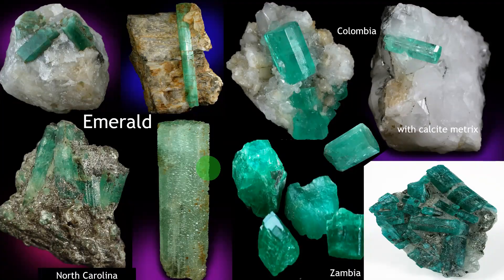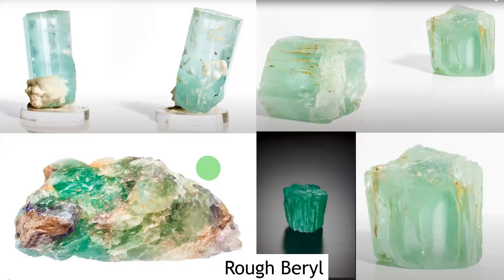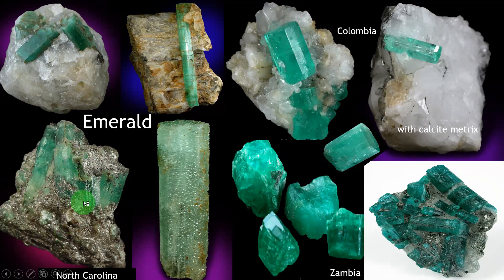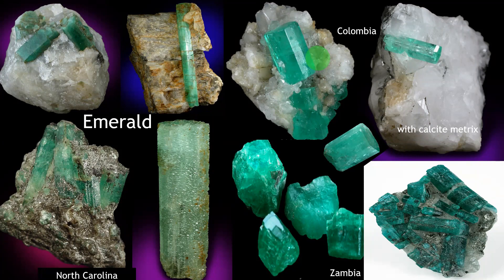Now look at emerald. This is aquamarine — sea water colour. If it is green, it is emerald. These are Zambian emeralds, Colombian emeralds, and North Carolina emeralds. World number one emeralds are Colombian. This is an emerald with mother stone calcite — it has grown inside the calcite matrix. See the hexagonal crystal shape of the emerald roughs.